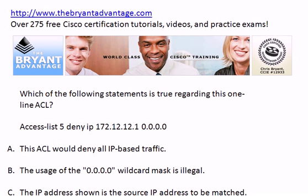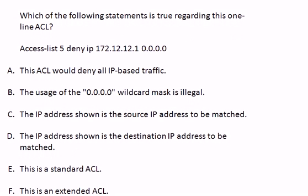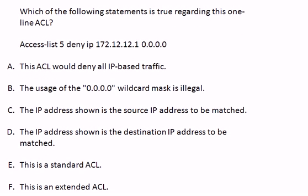Let's move on to question four. We're going to scroll up for this one a bit. Which of these statements shown on the screen is true regarding that one-line ACL? Access list 5, deny IP 172.12.1, followed by all zeros. Which of those statements is true? You might need to pause there for a moment.